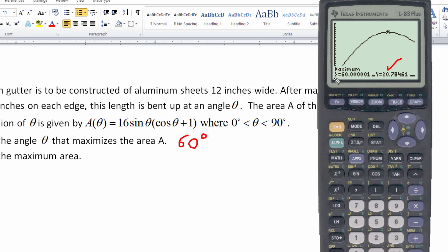In this case the x, or the h, is 60. And the maximum is the second value. So the maximum area is 20 point, and we'll round it to two places, 78. And that's square inches.